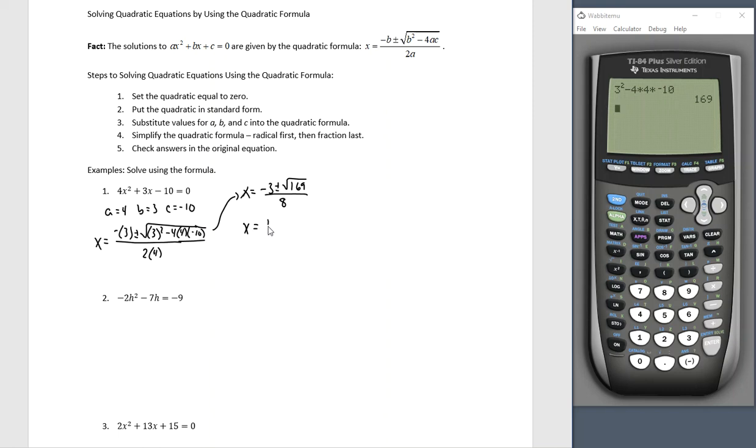Simplify the square root first. X equals negative 3 plus or minus square root of 169. That's right, it's 13, all over 8. So I simplified the radical, now I can simplify the fraction. I'll have negative 3 plus 13 all over 8, and negative 3 minus 13 all over 8. Negative 3 plus 13 is 10 over 8, and we'll always simplify our fractions to get 5 fourths. And negative 3 minus 13 is negative 16 divided by 8, which gives us negative 2.